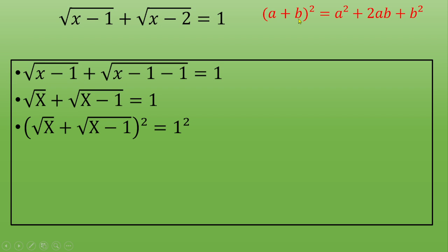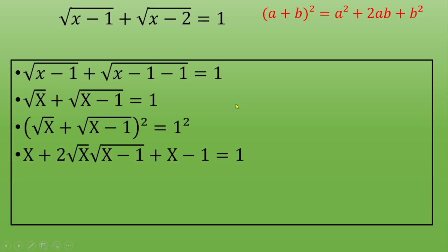You will use the remarkable identity (a + b)² = a² + 2ab + b². Squaring the left side gives: capital X plus 2 times the square root of capital X times the square root of (capital X minus 1), plus capital X minus 1.